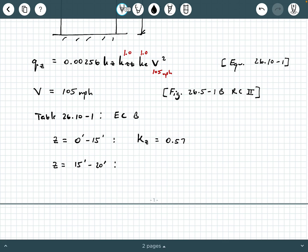Now, what happens if your building is 15 to 20 feet? Well, the table immediately jumps up to 20 feet. It's got 0 to 15 feet, and then the next row is 20 feet. So I'm just going to go ahead and write KZ equals 0.62.